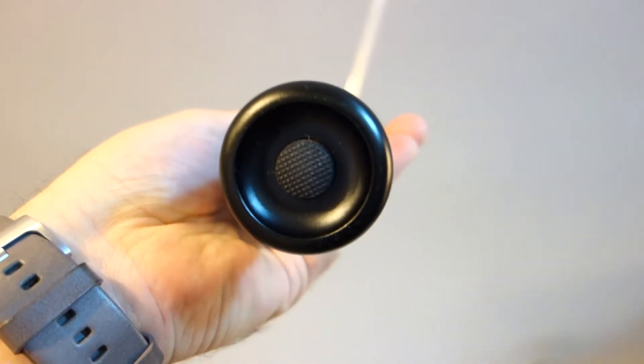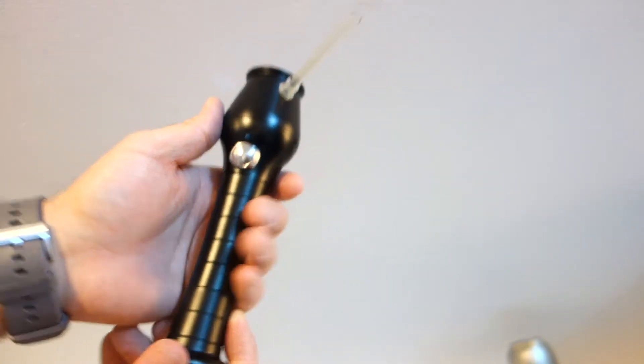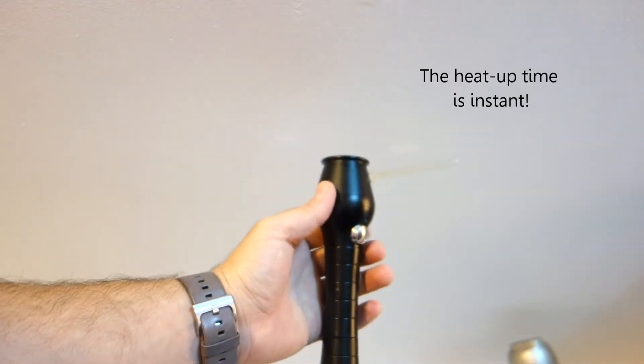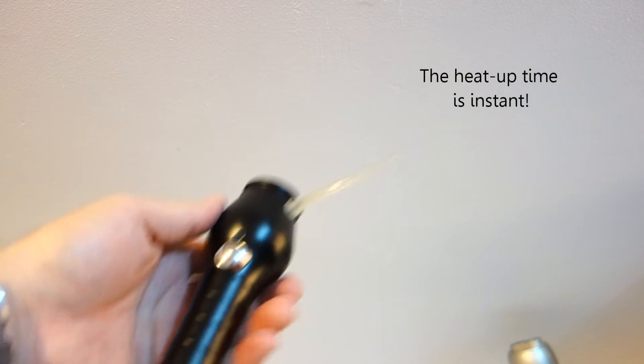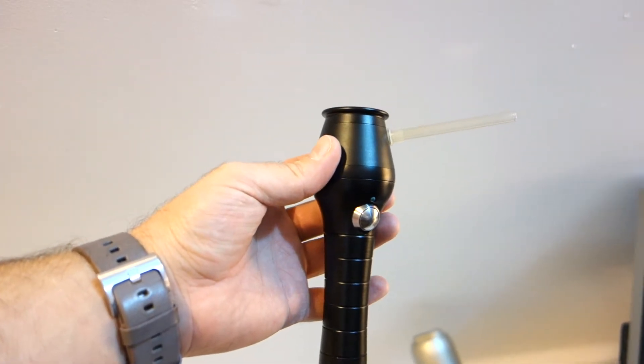Turn the unit back over and now to initiate the heating element, just hold down the silver button on the front of the device and within about 5 to 7 seconds, you should start seeing vapor forming through the see-through glass at the top. The key to getting the best results with the FlashVape, I have found,